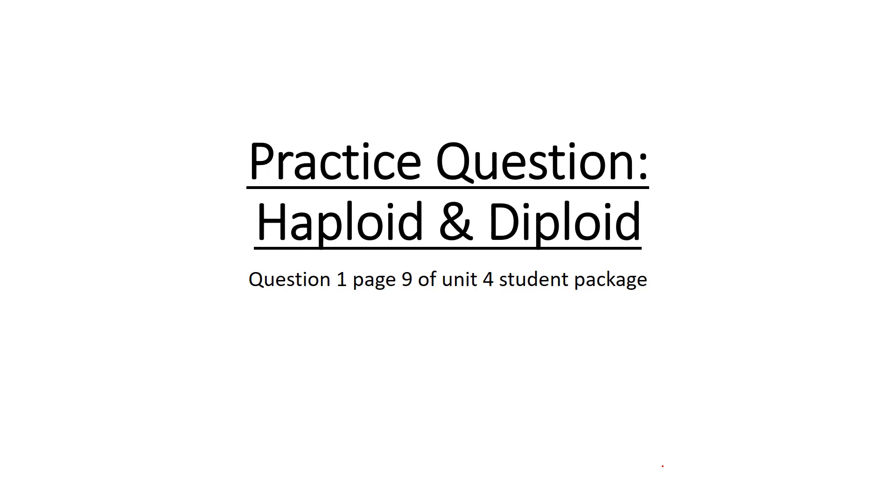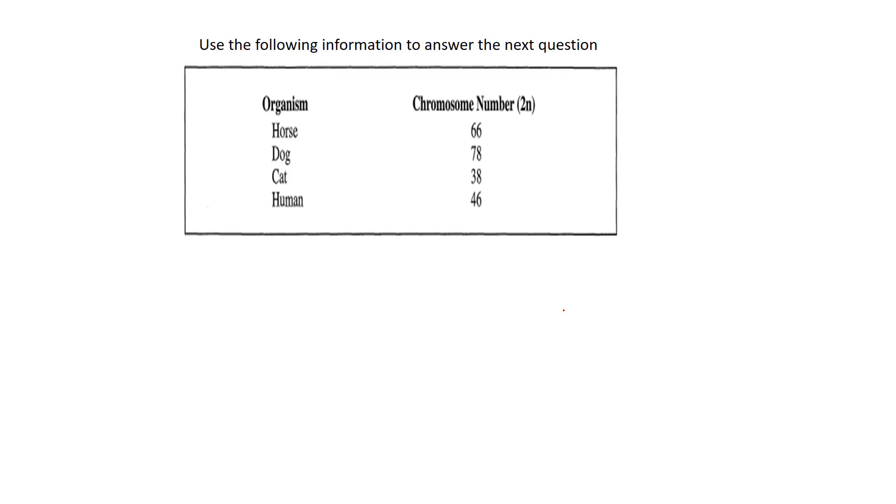Hey, welcome to another practice question. This one is on the whole concept of haploid and diploid cells. This particular question is question 1 on page 9 of your unit 4 student package. It says use the following information to answer the next question. I haven't popped the question up there now, so we're going to look at a strategy to help with that. This is a very typical question you're probably going to see on your final and on your unit exam when you're ready for it.